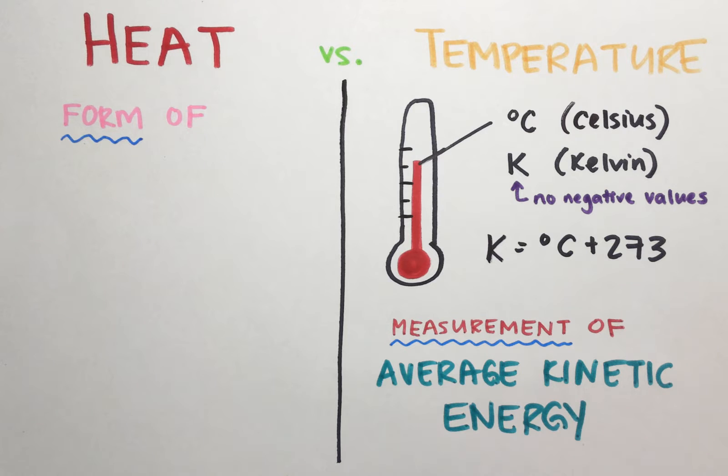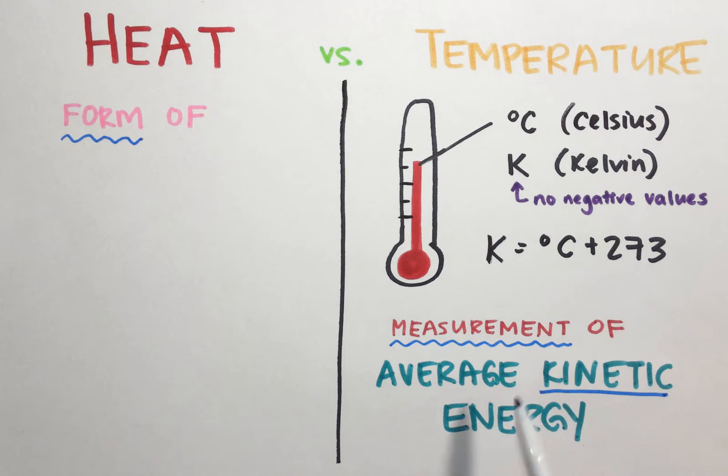Because this term kinetic, as you've seen before, means movement. So a measurement of how fast, on average, particles are moving. So whenever you see in a problem, this phrase average kinetic energy, you can just cross it out and write temperature and chances are the problem is going to get a lot, a lot easier. So have the that link between those two terms, average kinetic energy and temperature made in your mind.